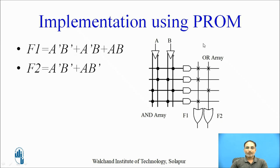For f2 we have two terms: A-bar B-bar + A B-bar. The output of the first AND gate, A-bar B-bar, is reused — fuse kept intact. Outputs of the second and fourth AND gates are not part of f2, so those two fuses are blown away. The output of the third AND gate, A B-bar, is part of f2 — fuse kept intact. So f2 is made up of these two minterms with their fuses retained, and the remaining fuses blown away. This is how you implement simple Boolean functions using programmable read-only memories.